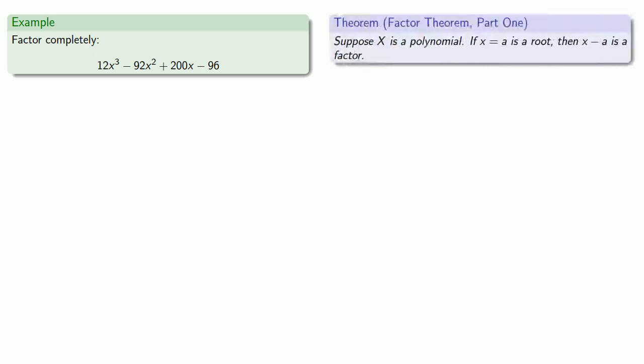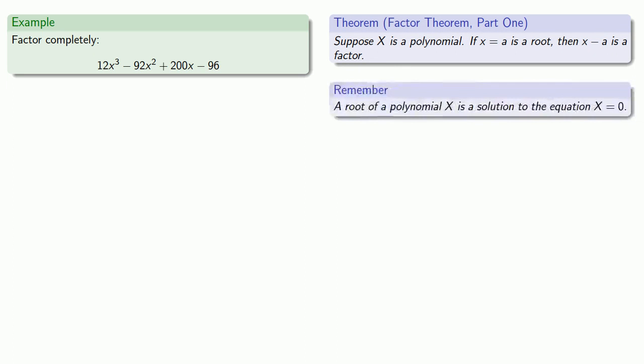So let's try to factor something like this. Our ability to factor completely relies on two important ideas. First, there's the factor theorem. If x equals a is a root of a polynomial, in other words, it's something that's going to make the polynomial equal to 0, then x - a will be a factor.